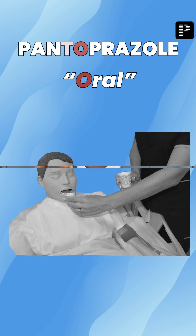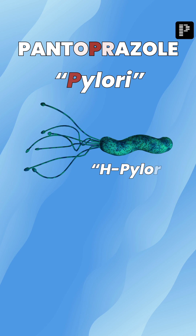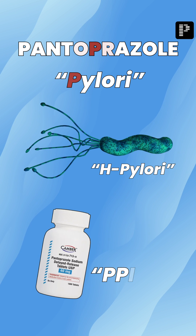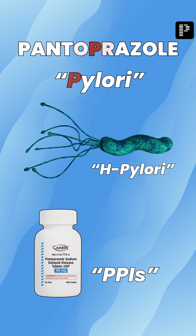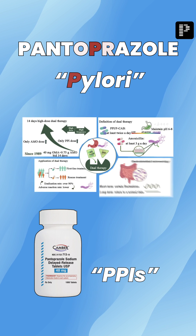The next letter is O — O for oral. When you give this drug orally, it has to be taken one hour before food, and also when given orally, these are enteric coated. The next letter is P — Pylori. So these PPIs are a part of the H. pylori eradication regimen.